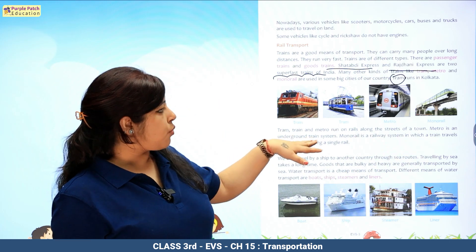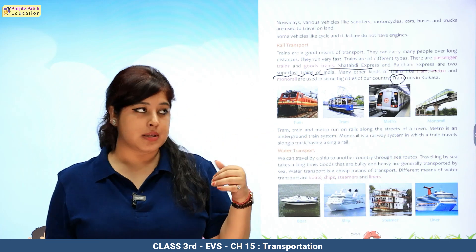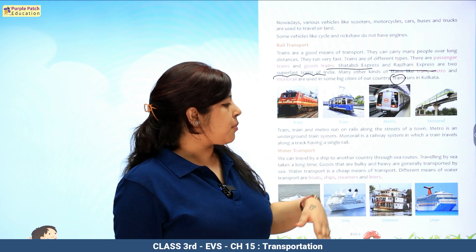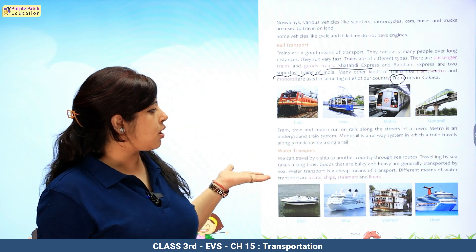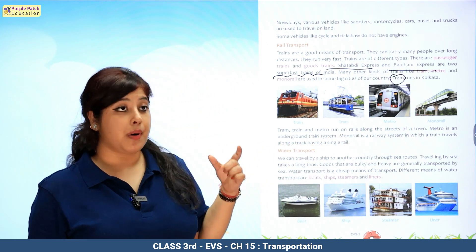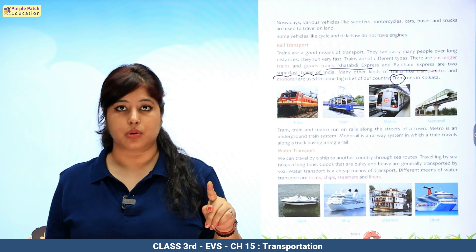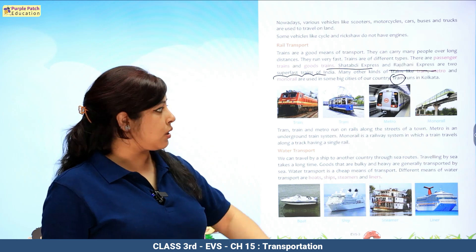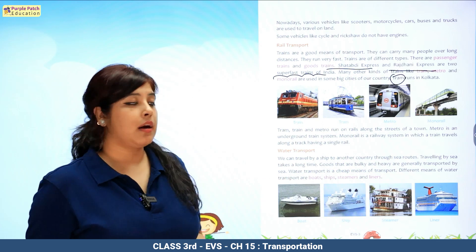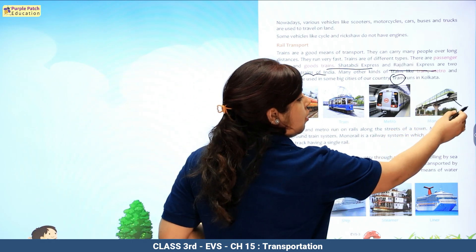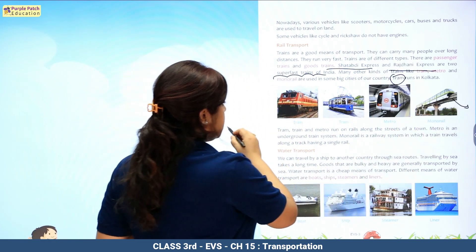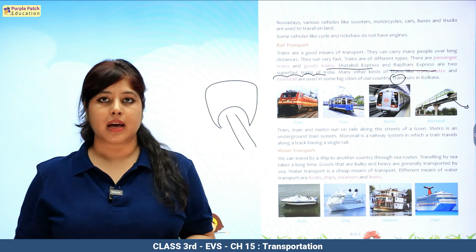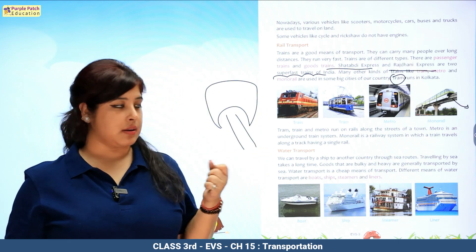Metro is an underground train system. Monorail is a railway system in which a train travels along a single track — mono means single track. You can see in the picture — single track hai, aur upar se us style mein puri train hai, but iska single track hai jispe woh run kar rahi hai.